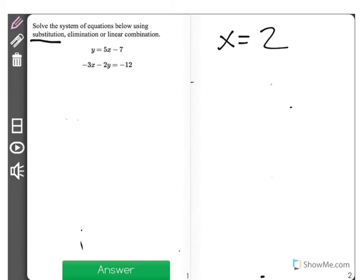And all I'm going to do is, in either equation, you could choose whichever you'd like, take x equals 2 and input it. So I'm going to choose the top one. y equals 5 times 2 minus 7.